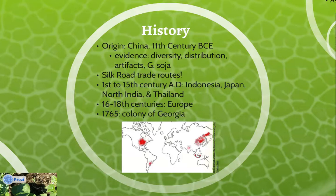China is the origin of soybean cultivation, with the first domestication dating back to the 11th century BCE. It is the region with the most diversity and distribution of the plant, and seeds have been found in ancient tombs and artifacts. Another piece of supporting evidence for China as the origin is a widespread distribution of Glycine Soja, the earliest ancestor of the cultivated soybean. Studies of the genes of soybeans in areas such as Indonesia, Japan, North India, and Thailand suggest that the soybean entered these regions in the time frame of the 1st century AD to the 15th century AD.